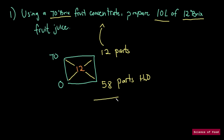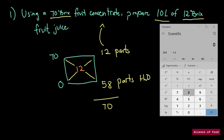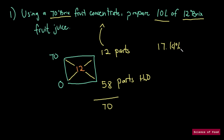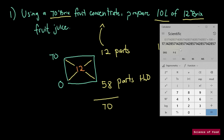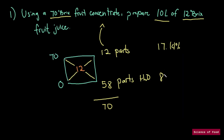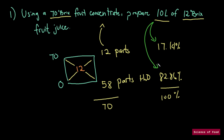To get the percentages, we take the sum, which gives us 70. Let's bring out our calculator. So 12 divided by 70 times 100 gives us 17.14 percent. We can subtract 17.14 from 100, or we can do 58 divided by 70 times 100, which gives us 82.86 percent. These should equal 100 percent. So we multiply 10 liters by 17.14 percent and 10 liters by 82.86 percent, giving us 1.714 liters and 8.286 liters.